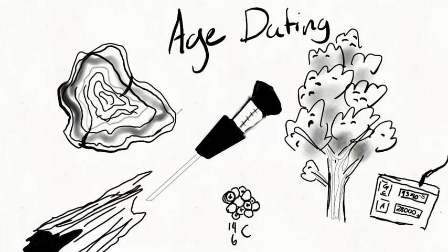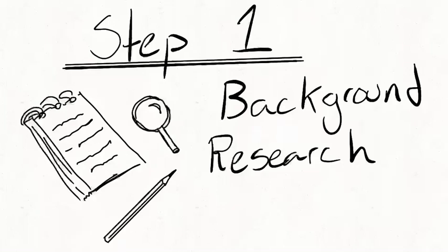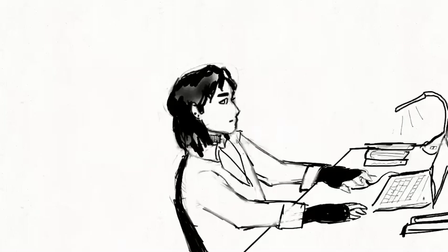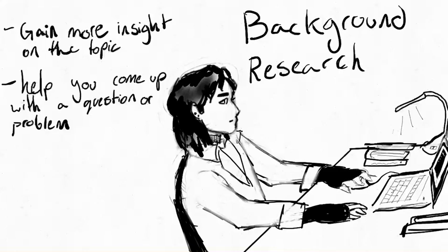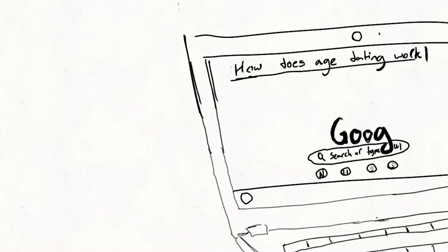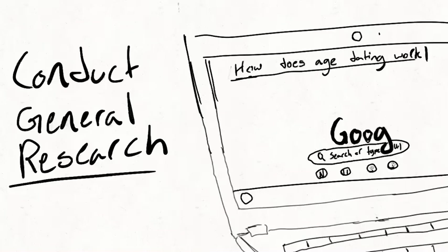We will be using a made-up project about the different methods of age dating as an example. Background research: The first step to any science fair project is background research. This helps you to understand more about the topic you are interested in and can also help you come up with a testable question or problem you might want to investigate for your project. In our example, this may involve conducting general research about how age dating works.